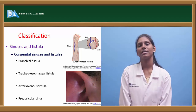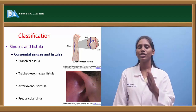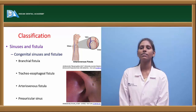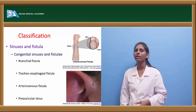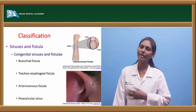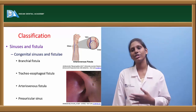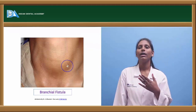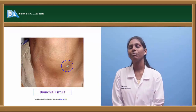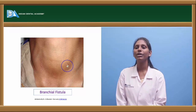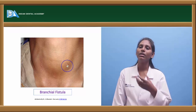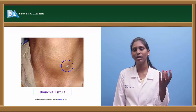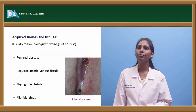Coming to the classification of sinuses and fistulas — congenital and acquired. In congenital sinus and fistula, we have branchial fistula, tracheoesophageal fistula, arteriovenous fistula, and pre-auricular sinus. This picture shows a branchial fistula — it is a communication between a branchial cyst and the external skin region.